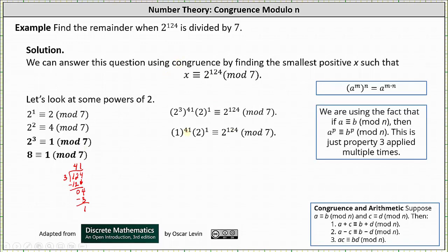And now simplifying, 1 to the power of 41 is 1, 2 to the first is 2, 1 times 2 is 2.